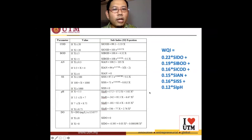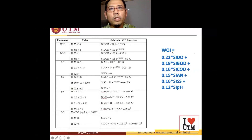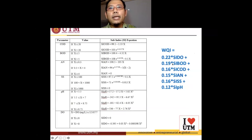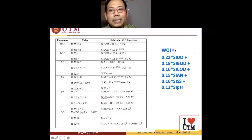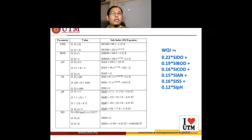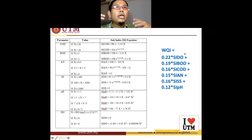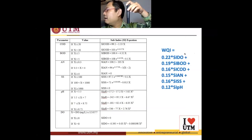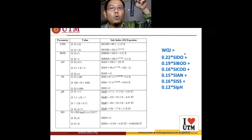A little bit of calculation — this is the formula. When they say the sub-index of DO, how do we get the sub-index of DO? We look at this table. Let's say the DO is 7 mg per liter. You are doing analysis of a river, you check the DO — you use this DO probe. Imagine this paper cup is your water sample; you probe it and get the reading of the oxygen — let's say 7 mg per liter.